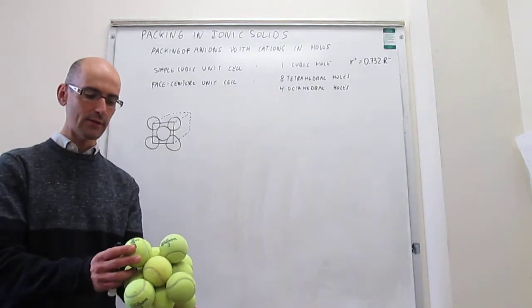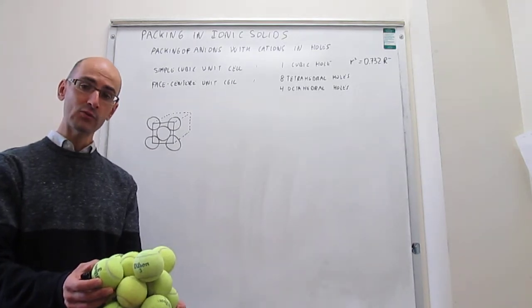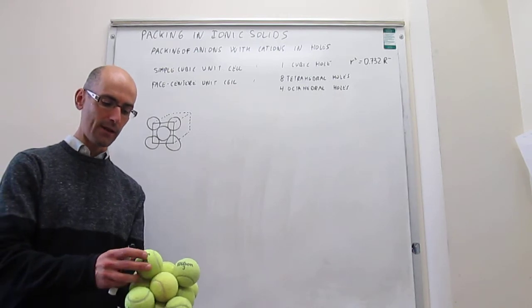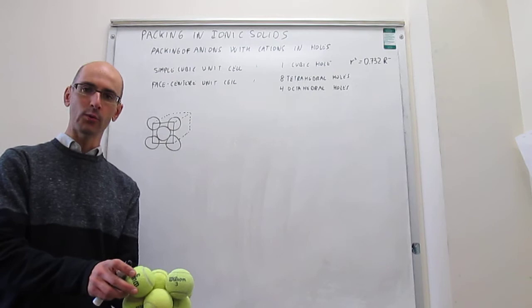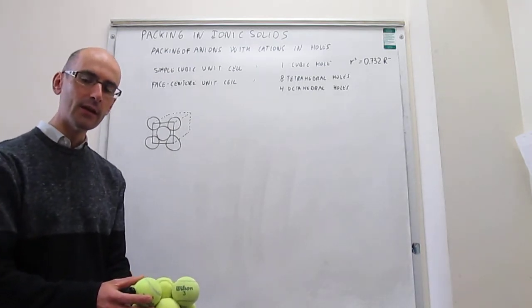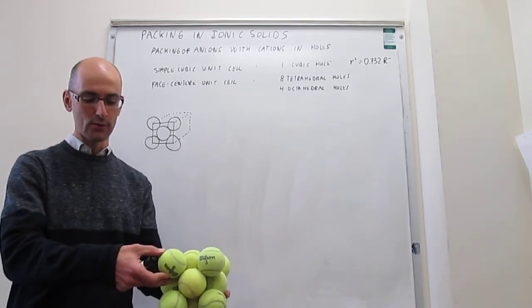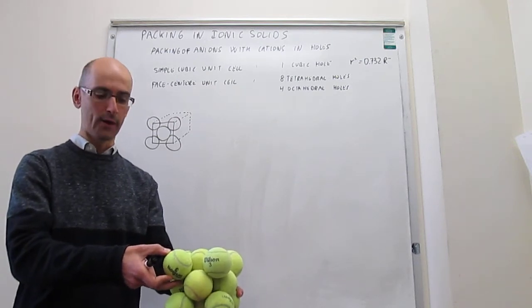Every single one of the spheres that you see would correspond to an anion. There are two types of holes in this structure. One of them is the octahedral hole, like what you have here at the edge and in the center of the cube. And then you will have tetrahedral holes, which will be right here. So we're going to calculate what would be the limiting cation radius that would actually fit perfectly into this octahedral hole right here.